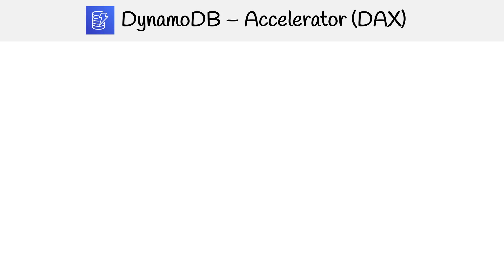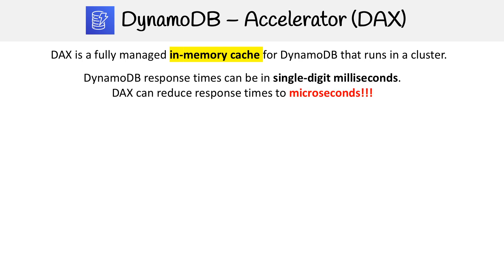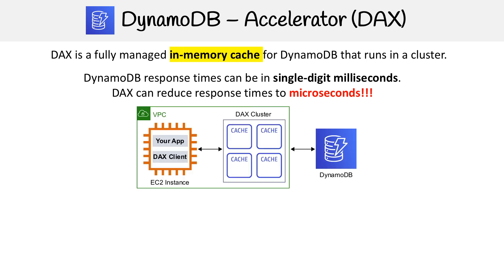Here we're going to take a look at DynamoDB Accelerator, also known as DAX. It is a fully managed in-memory cache for DynamoDB that runs in a cluster, and its response times can be in single-digit milliseconds. DAX can reduce response times to microseconds, which is really important for certain types of workloads.